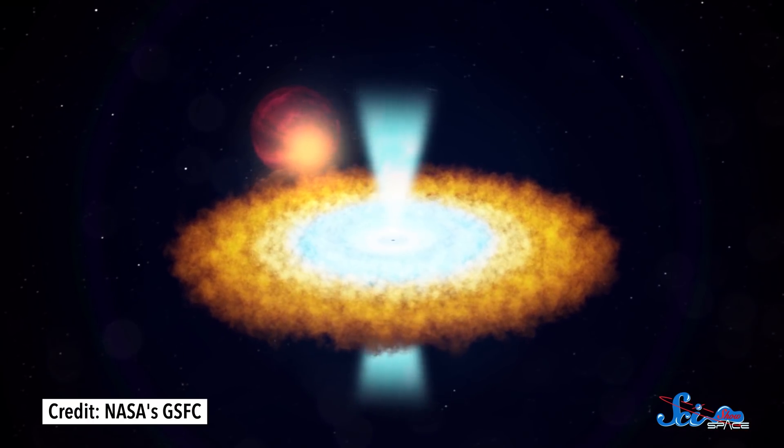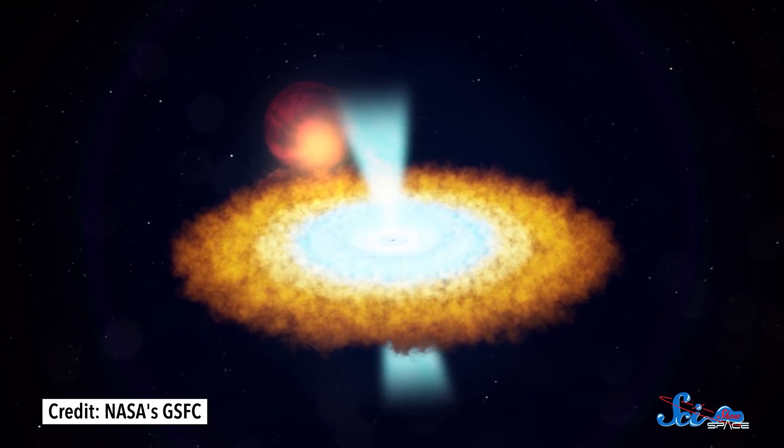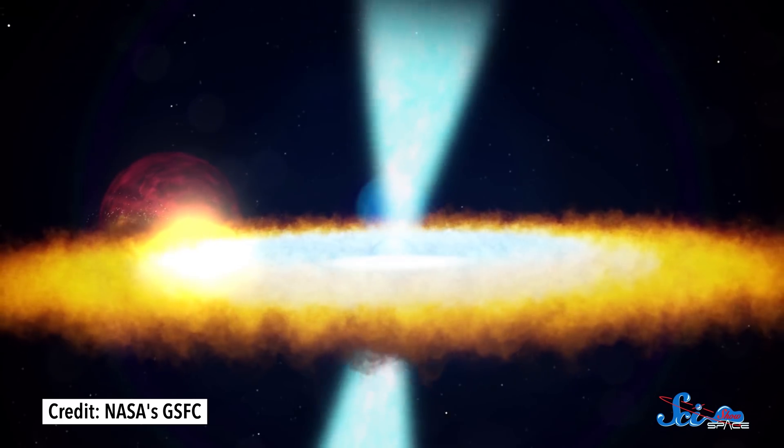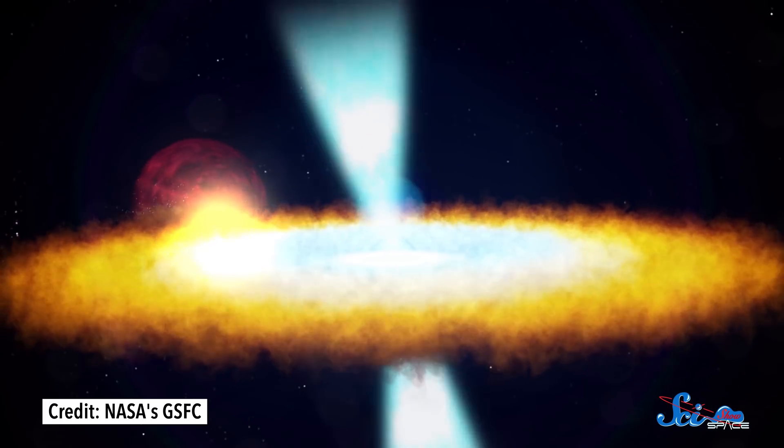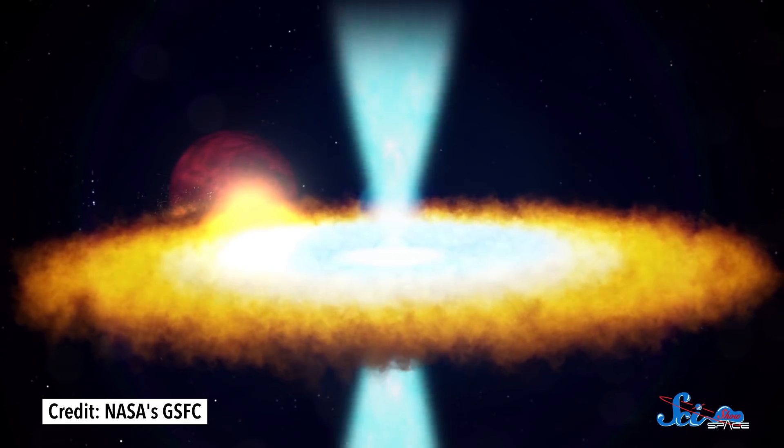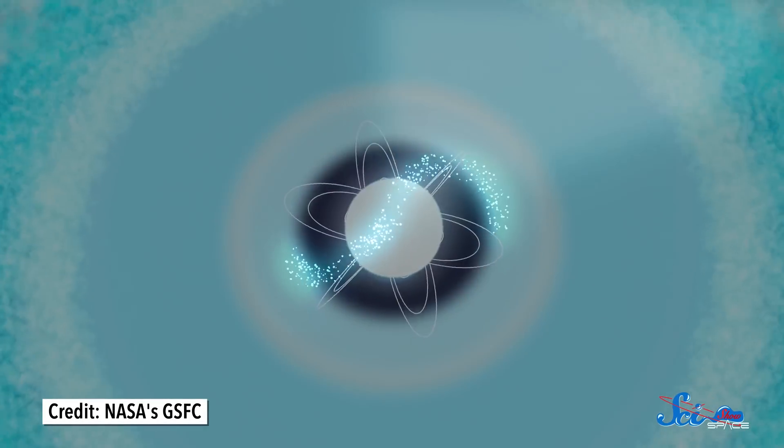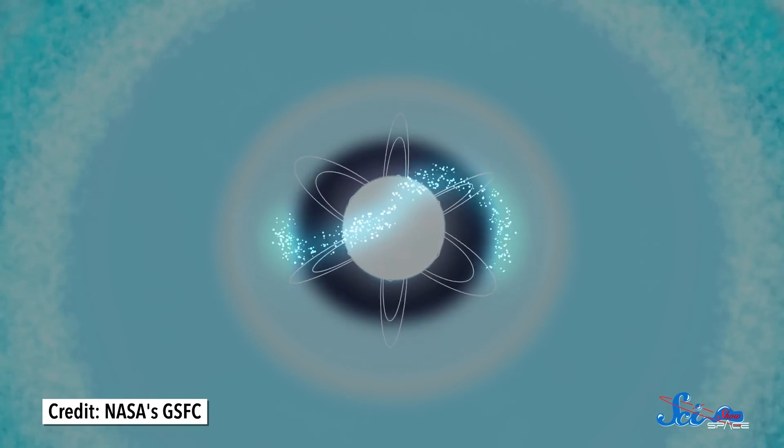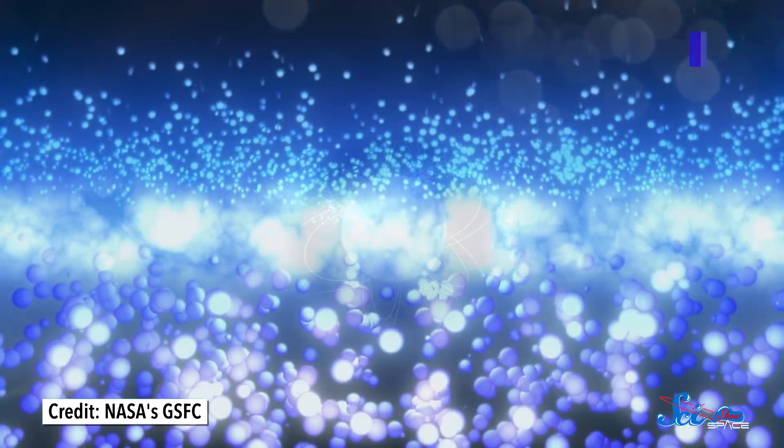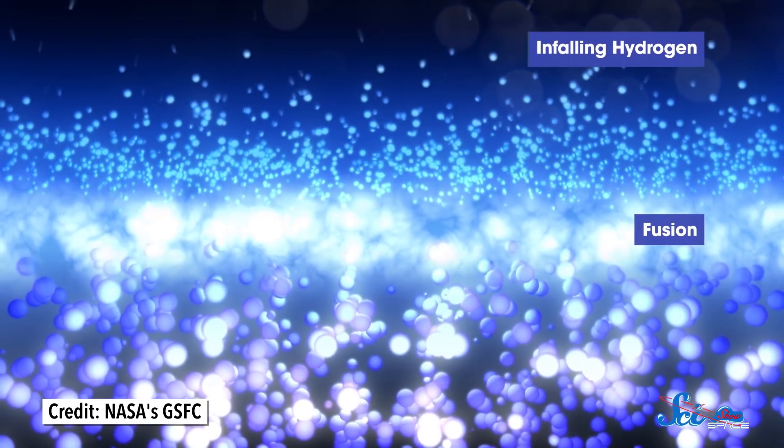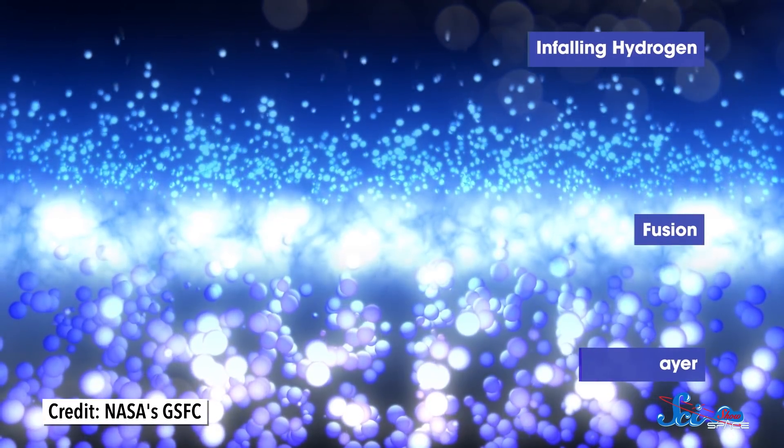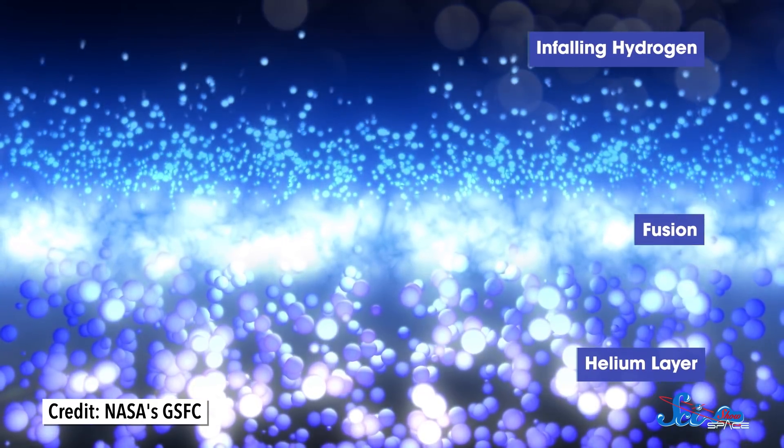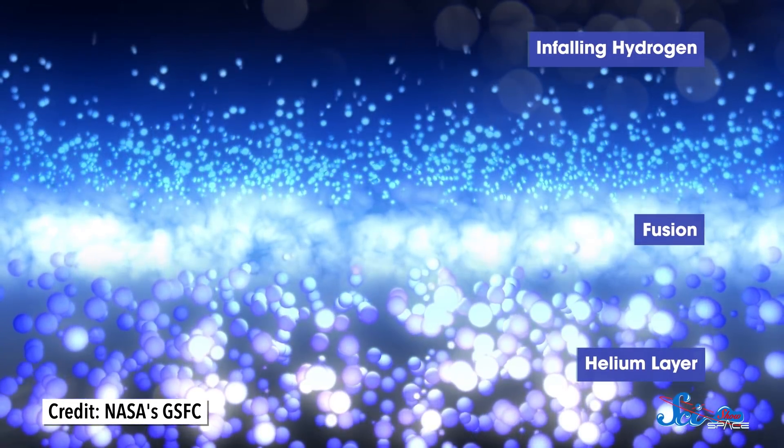It was the fact that this pulsar had a combination of traits that's never been observed in the same flare. For context, X-ray bursts happen when J1808 steals hydrogen gas from its companion, a gaseous body called a brown dwarf that orbits the pulsar. Over time, the pulsar steals enough gas that some of it rains down onto the pulsar's surface. There, it's hot enough and there's enough pressure that the bottom layer of hydrogen undergoes nuclear fusion, and turns into helium. And when there's enough helium, it explodes, and you get an X-ray burst.